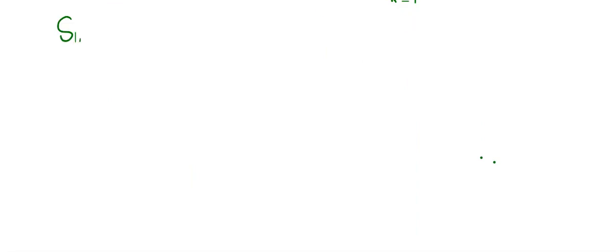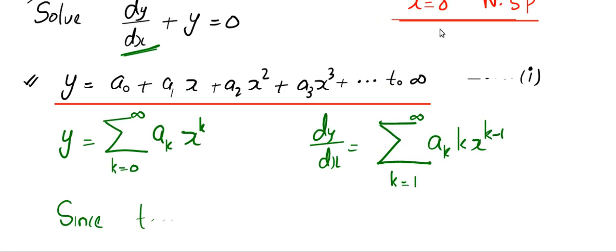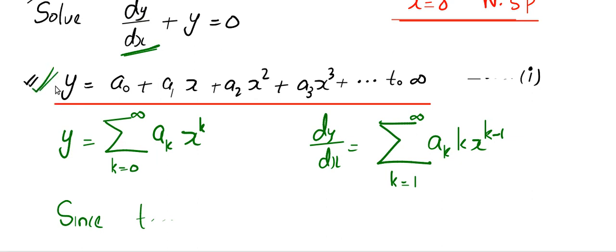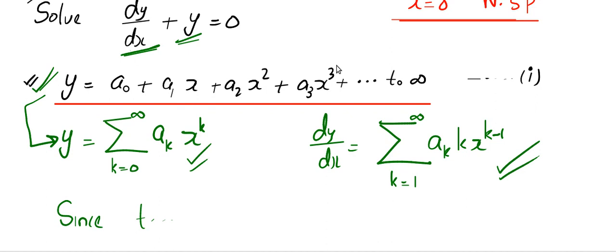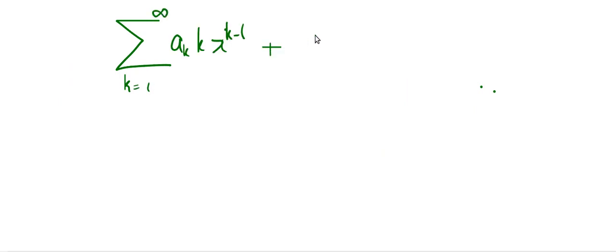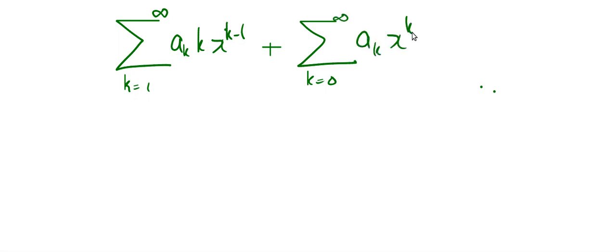Since the solution will balance the given differential equation, this is our answer — our solution. That means the same as this: it will balance the equation. So instead of dy by dx, I can plug in this quantity, and instead of y, I can plug in this quantity. I am allowed to do that because I believe this is the solution. But don't forget the aim: our aim is to find a naught, a1, a2, a3, etc., and plug them in at the last. So the equation is dy by dx — which equals k equal to 1 to infinity ak k x to the power k minus 1 — plus y, which is k equal to 0 to infinity ak x to the power k, equal to 0.